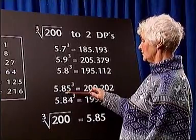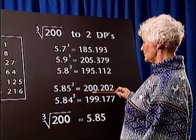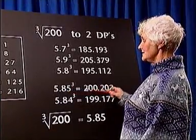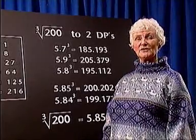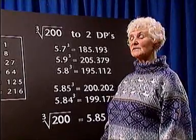5.85 cubed is 200.202. This is still above 200, so maybe we can improve on the estimate again.